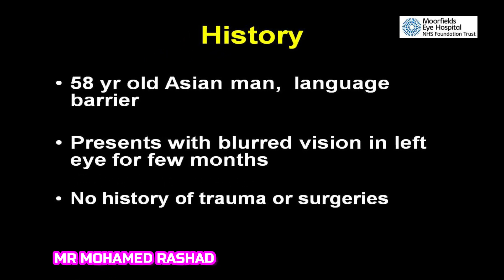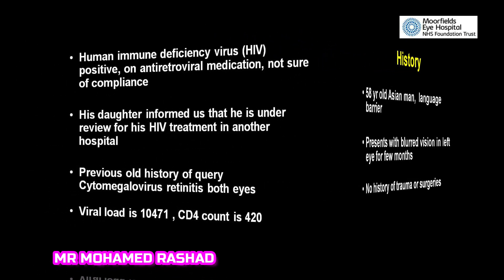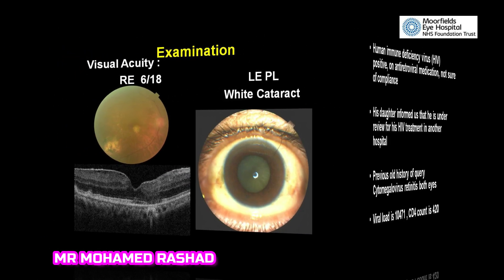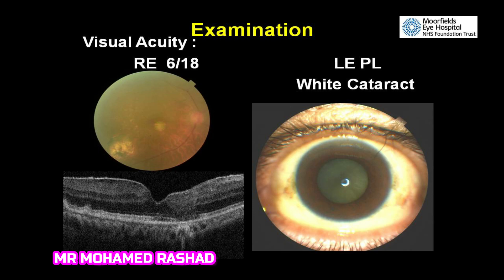This is a 58-year-old Asian male with a language barrier, presenting with blurred vision in the left eye for a few months. No history of trauma or surgeries. HIV positive on antiretroviral medication, under follow-up at another hospital. Previous history of cytomegalovirus retinitis. Viral load 1047 and CD4 420.